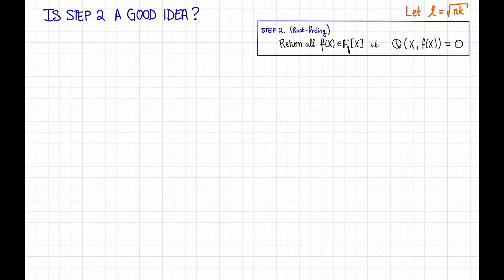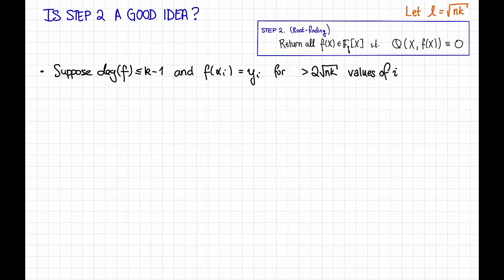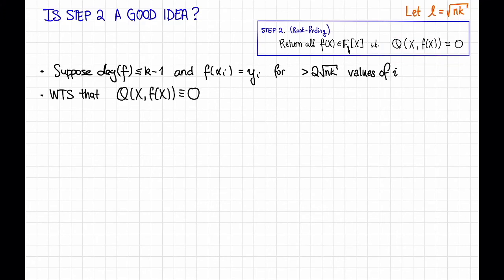So step one can be done efficiently — we just set up and solve this linear system. How about step two — is it a good idea? We'll come back to how to do it efficiently later, but first let's ask whether it's correct. Suppose f is a polynomial we would like to return: it has degree at most k minus 1, and f(alpha_i) equals y_i for strictly more than 2 times the square root of nk values of i. We want to show our algorithm returns f, meaning q(x, f(x)) is identically equal to zero. To show this, consider the univariate polynomial r(x) = q(x, f(x)), and we'll show r is identically zero.